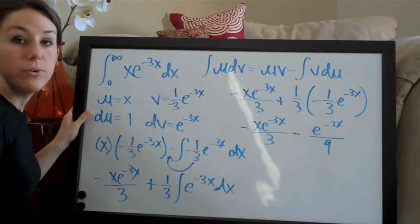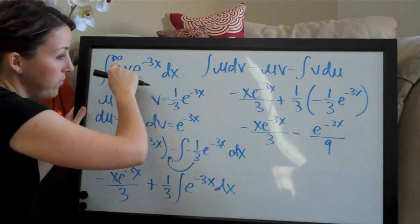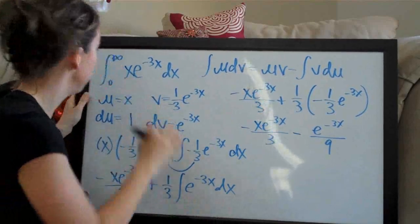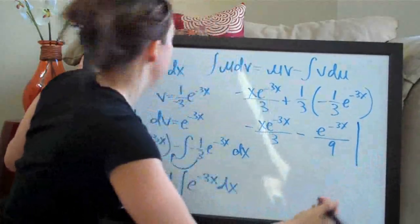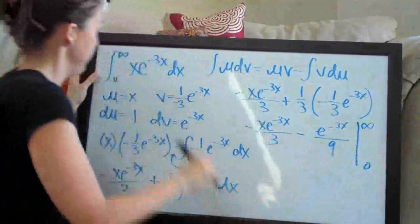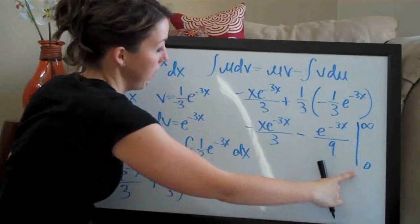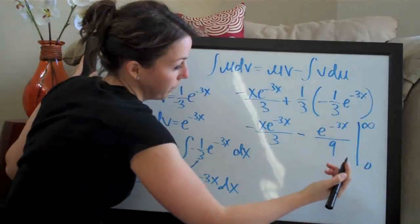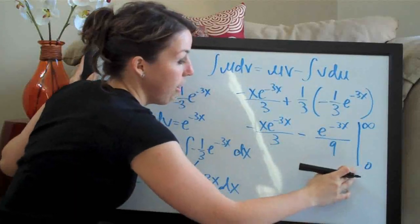Now we need to evaluate this integral on the range 0 to infinity. We draw a vertical line and write 0 to infinity — infinity on top, zero on the bottom. This notation means we evaluate everything on the left side of the line over the range 0 to infinity.